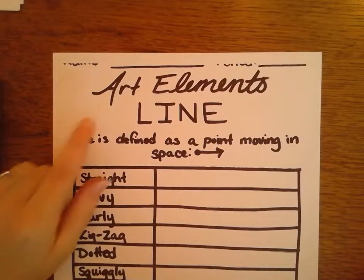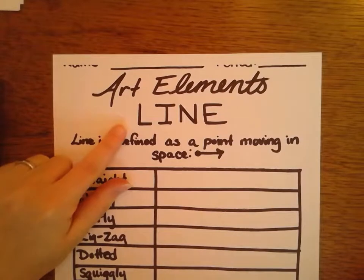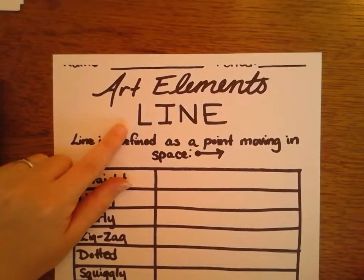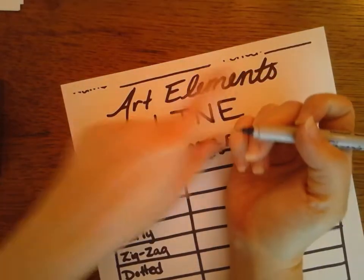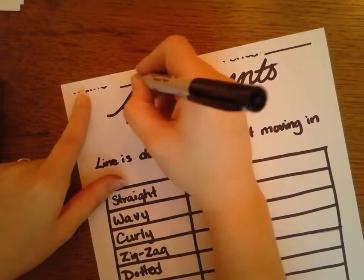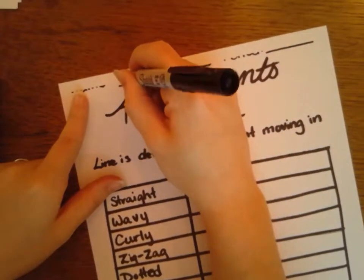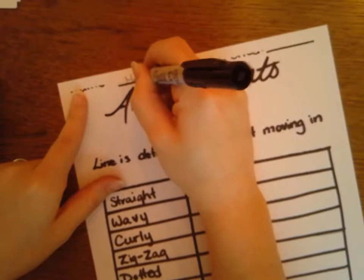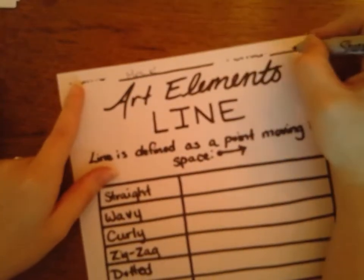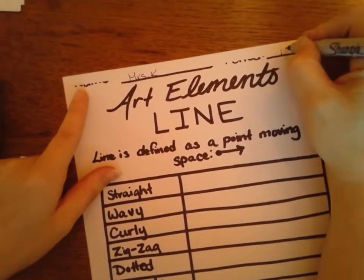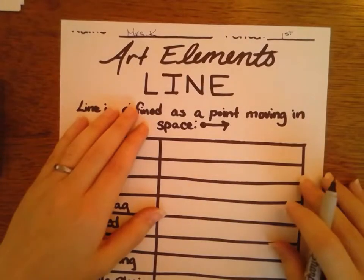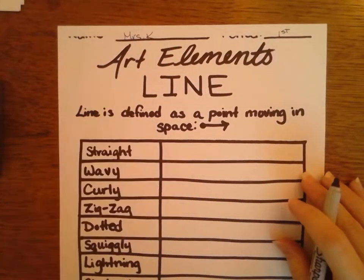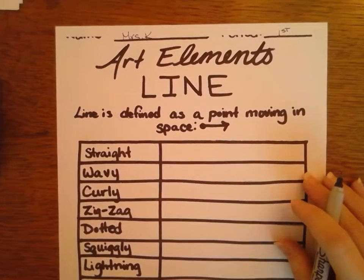Our first one that we're going to start talking about today is the art element line. Up on the top of your worksheet, I need your name — mine will be Miss K — and whatever class period you're in. That way, if it gets lost, I'll be able to get it back to you, because you will be able to use these on your final test.